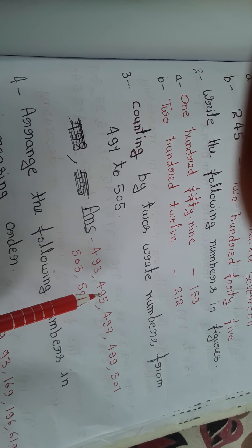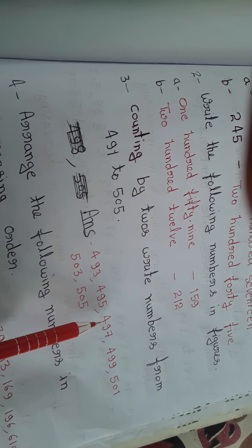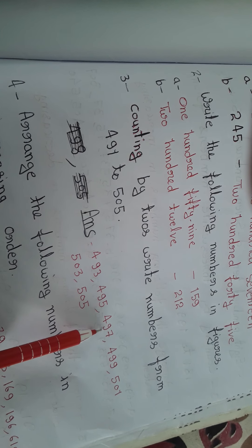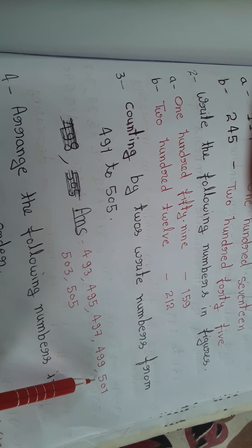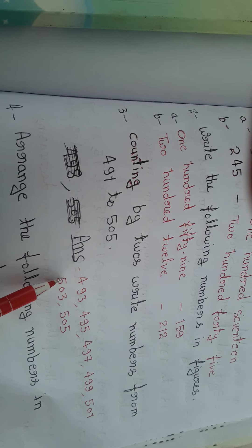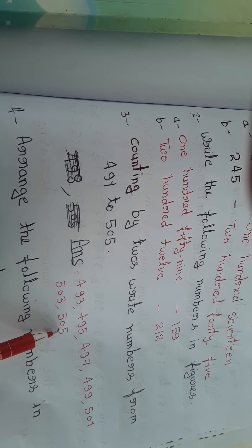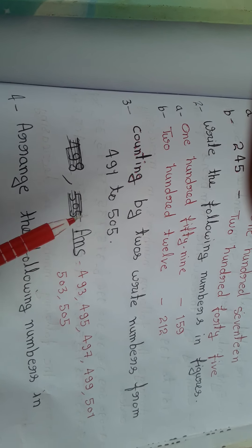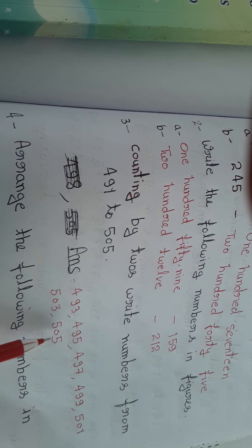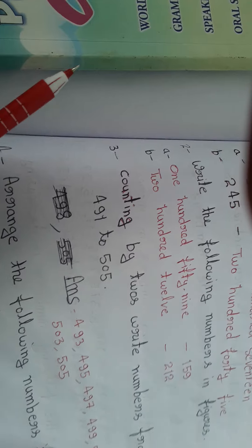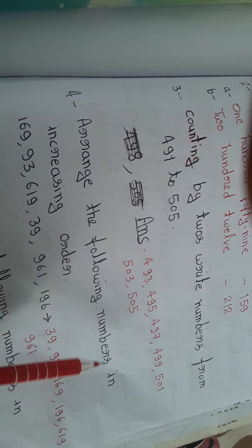491, plus two: 493, plus two: 495, plus two: 497, plus two: 499, plus two: 501, plus two: 503, plus two: 505. We reach 505, and 500 is also a point here. So this is clear.